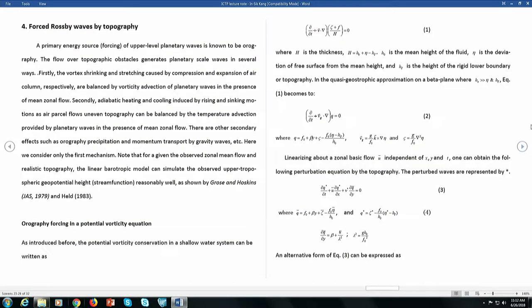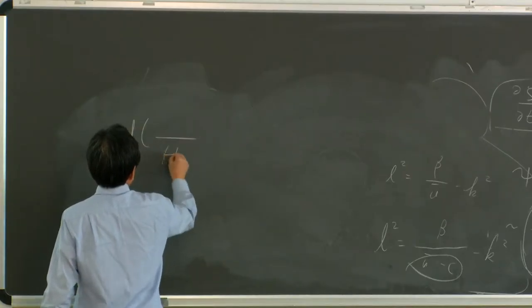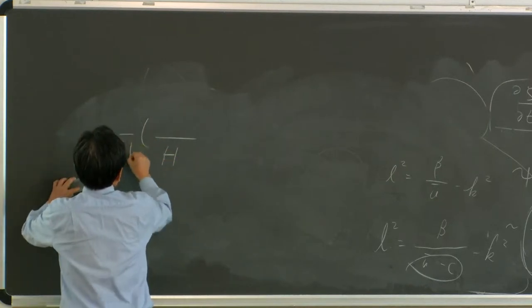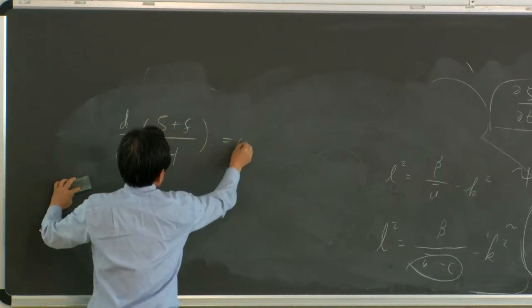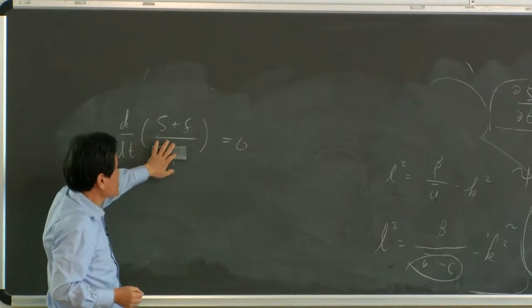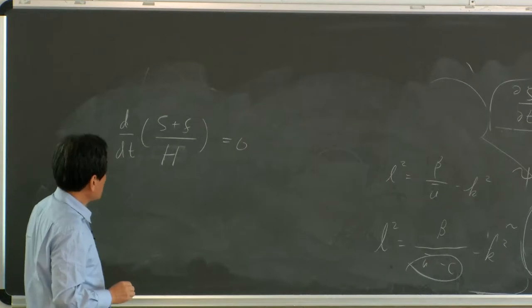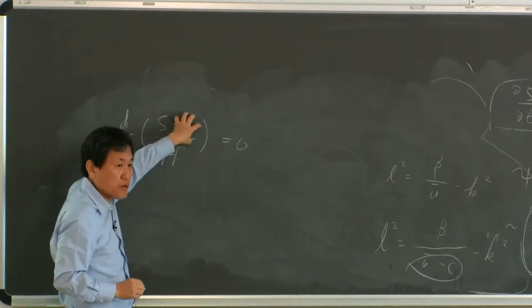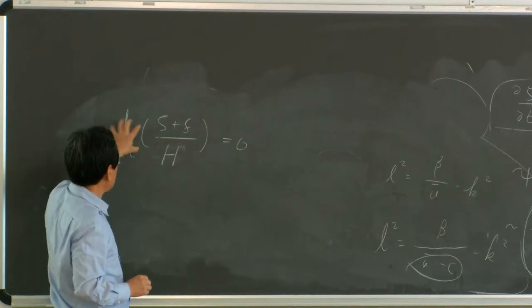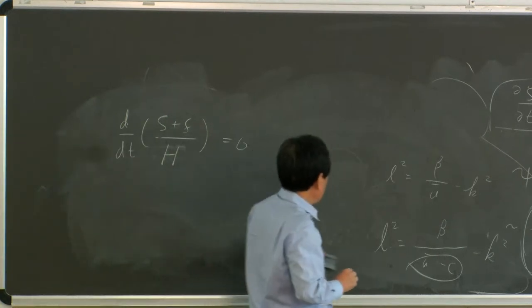Now we consider that height cannot be constant because of mountains and topography — height is varying. Previously I made h constant, so absolute vorticity was conserved. But potential vorticity involves height which is also varying. So rotation can be generated by change of the beta parameter and also by change of height. Height change creates vorticity.